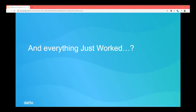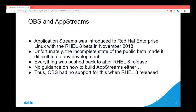You'd think with all this, everything just worked out of the box, but it's not quite so simple. Application streams is actually fairly new to the ecosystem — it was introduced to Red Hat Enterprise Linux with the RHEL 8 beta in November 2018. Unfortunately, the incomplete state of the public beta made it difficult to do any development, so everything was kind of pushed back.